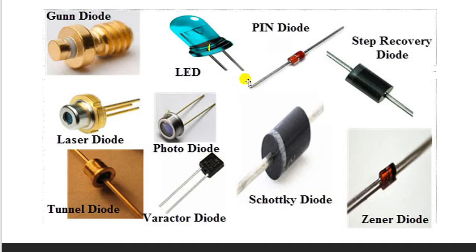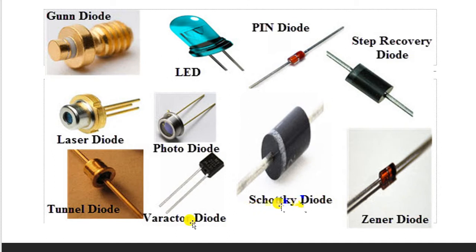Different types of diodes are available in the market. The most familiar is the LED, or Light Emitting Diode, which is useful in traffic lights, displays in malls, offices, and railway stations, aeroplanes, and seven-segment displays. Other types include PN diode, step recovery diode, Schottky diode, varactor diode, photodiode, laser diode, tunnel diode, and gun diode, each with different applications.